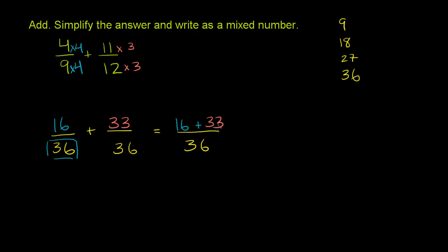And 16 plus 33 is what? 6 plus 33 would be 39. And then you have another 10, so it's 49. So it's equal to 49/36.